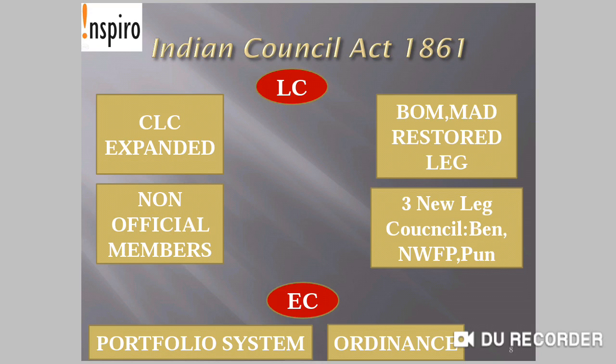Now Indians could be associated with the legislative process, and Bombay and Madras had their legislative powers restored. Earlier, under the Chartered Act of 1833, their powers were taken away and submitted to the Governor General of India. But by the Indian Council Act 1861, their legislative power was restored, and the decentralization process in India's constitutional setup began from this point.